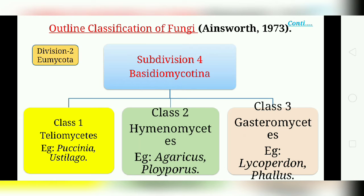Basidiomycotina includes properly called parasites such as rust or smut, saprophytic forms like Agaricus, which are commonly called puffballs, and wood-parasitic polypores. The perfect state of Basidiomycotina is the basidiospores.